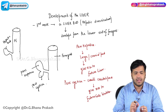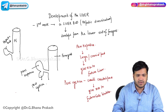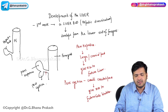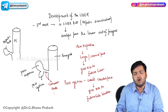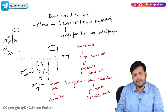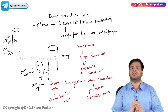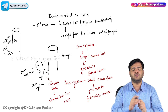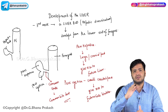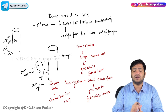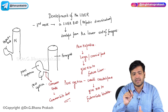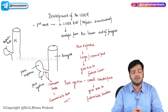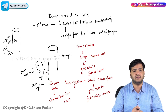The common stock between the pars hepatica and pars cystica will give rise to the common bile duct. So the upper part is the pars hepatica giving rise to the complete liver, the lower part is the pars cystica giving rise to the gallbladder, and the common stock will form the common bile duct.